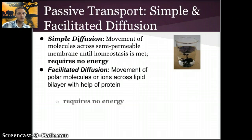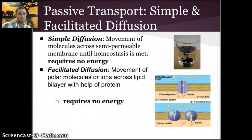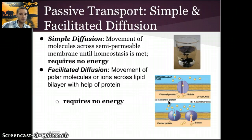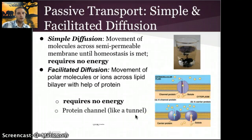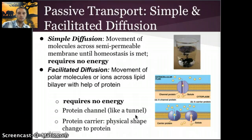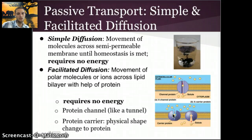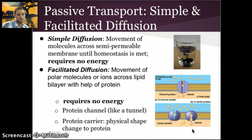That facilitator is a protein, which helps move the molecule across the membrane. There are two ways this can happen. One is through a channel protein — think of it as a tunnel — where molecules move from high to low concentration through the channel. The second is a carrier protein, where the molecule binds to the protein, the protein changes its shape, and then releases the molecule inside the cell. Again, neither of these requires energy.